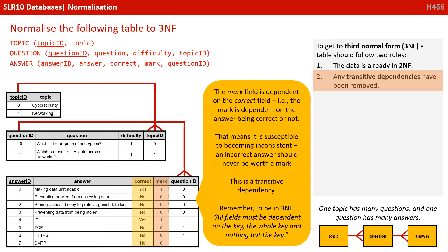Now to get to third normal form, we check the data is already in second normal form, which it is. And we make sure any transitive dependencies have been removed. Well, the mark field is dependent on the correct field, i.e. the mark is dependent on the answer being correct or not. So if we leave it like this, we're actually susceptible to becoming inconsistent. An incorrect answer should never be worth a mark. This is a transitive dependency.